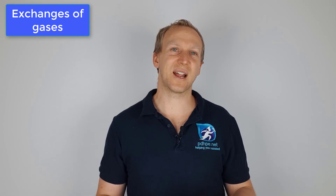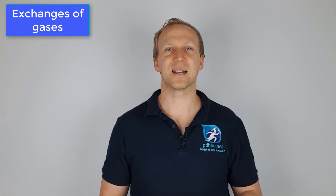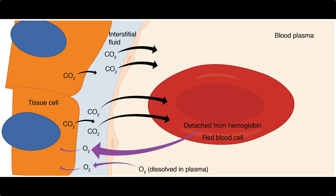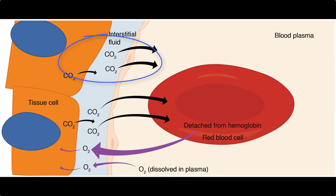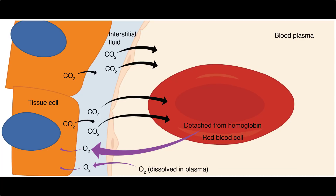The next gas exchange happens in the cells of your body — particularly around your muscles, since all cells need oxygen to function, and muscles are most important for movement. Your capillaries surround the muscle cells and exchange oxygen into the muscle while exchanging carbon dioxide out. The oxygen is carried in the blood attached to hemoglobin, which transmits it across the cell membrane and passes it to myoglobin — a similar molecule inside the muscle that transports oxygen to where it's needed. Carbon dioxide transfers out of the body cell and into your blood.